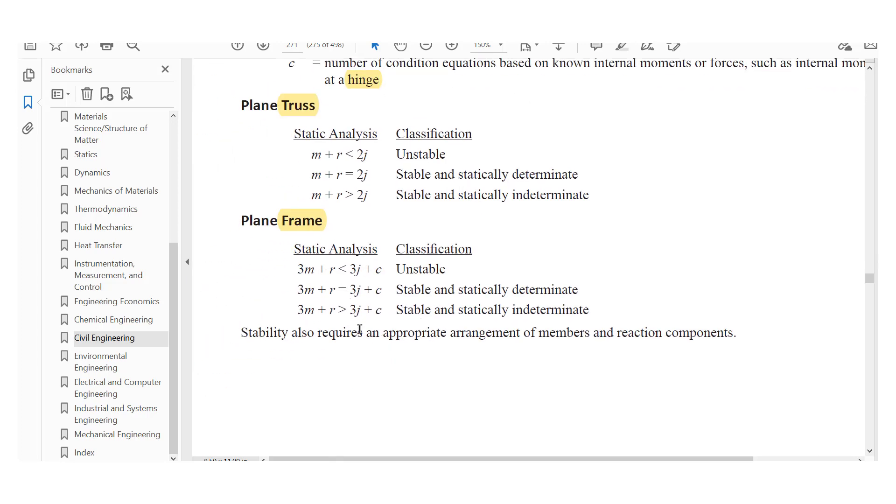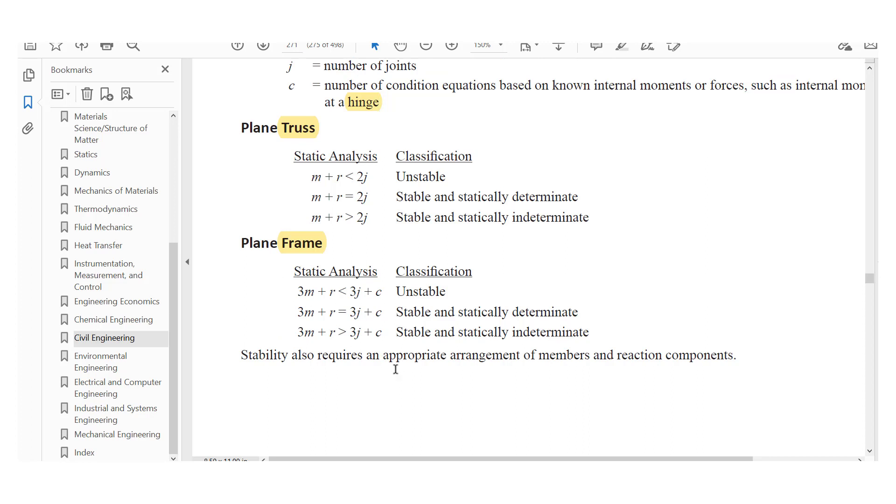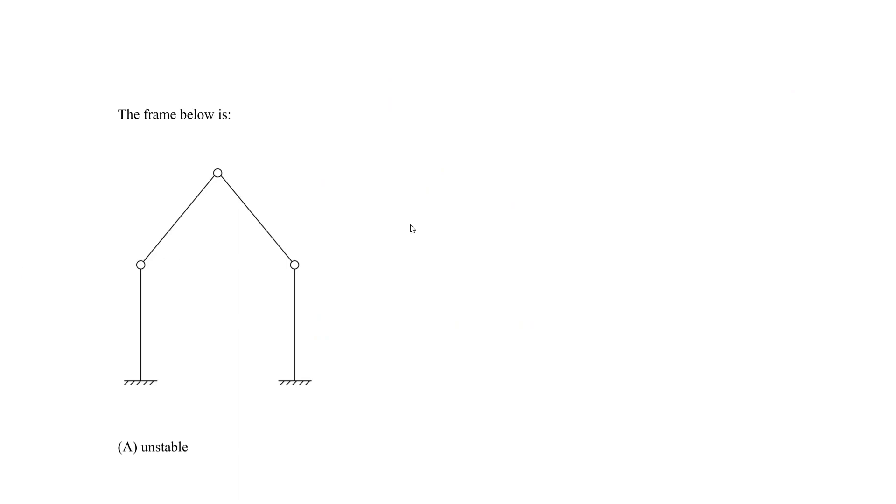If we have the frame, that's what we'll do. Let's find M, R, J and C. For this one, we know the number of members. So let's call that M equals to what? We have one here, two, we have this third one and we have this fourth member. So we have a total of four.